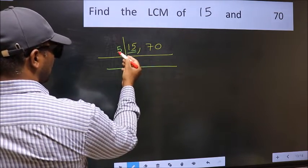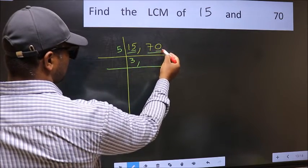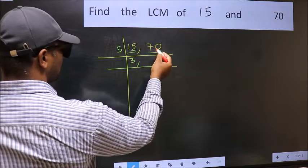When do we get 15 in 5 table? 5, 3 is 15. The other number 70. Last digit 0, so this is divisible by 5.